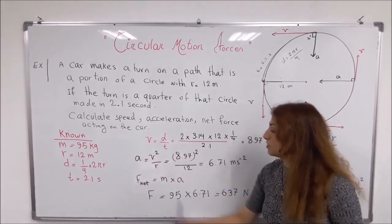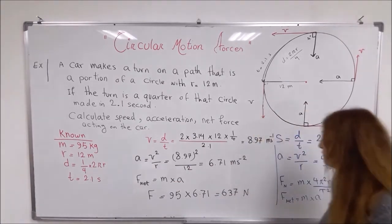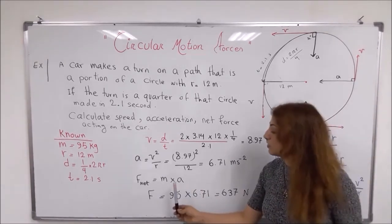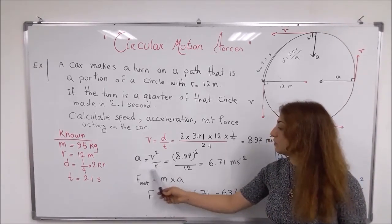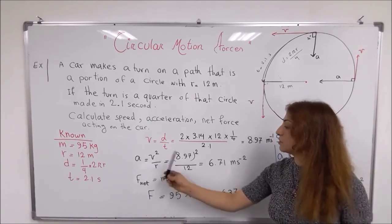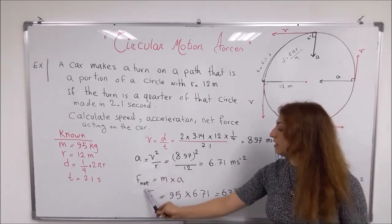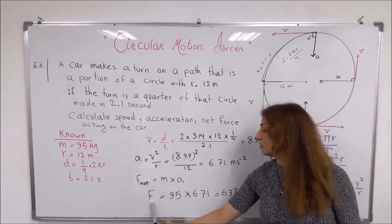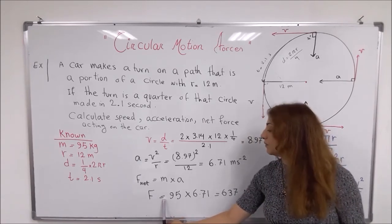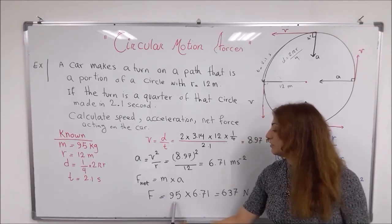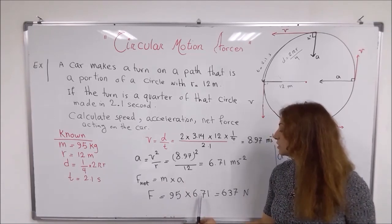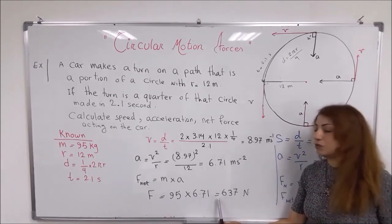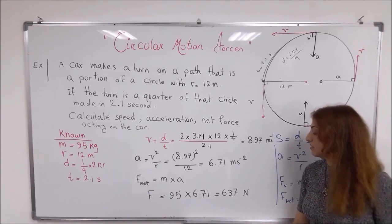For the net force, I use F = ma, because we have already calculated v² / r as acceleration. I substitute: F = m × a = 95 kg × 6.71 m/s² = 637 Newtons acting on the object.